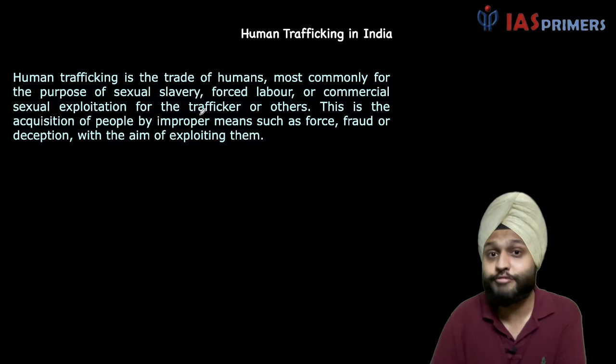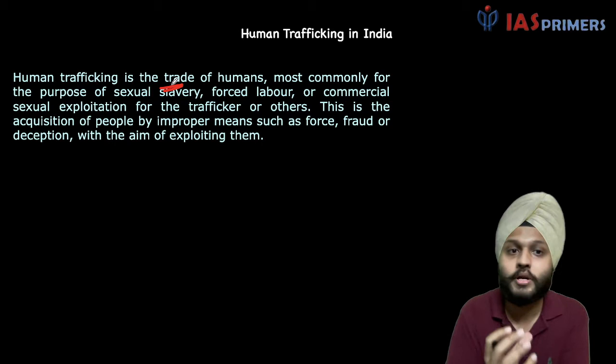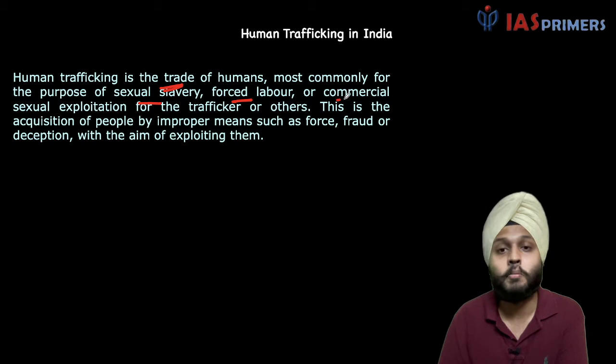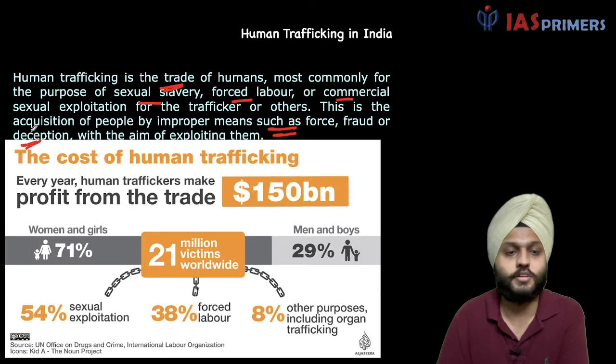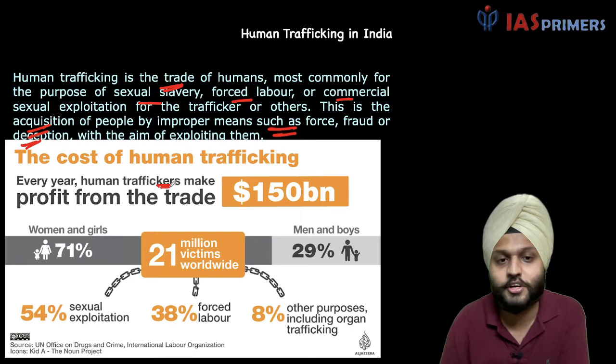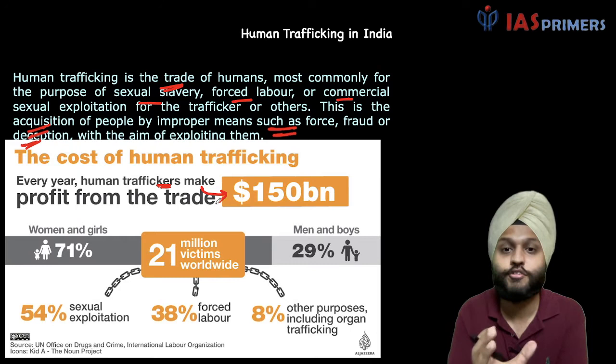Let us see the definition of human trafficking. It is defined as the trade of humans, most commonly for the purpose of sexual slavery, forced labor, or commercial sexual exploitation for the trafficker or others. This is the acquisition of people by improper means such as force, fraud, or deception. So improper means and acquisition are important terms in the definition. And why is this done? Because traffickers and exploiters want to earn money. It is estimated that this is a trade worth 150 billion dollars.